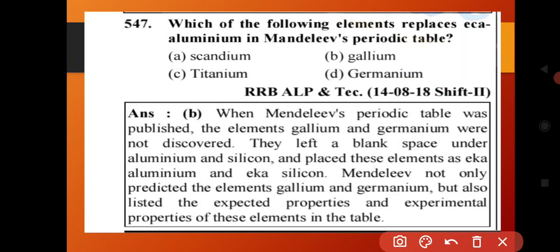In Mendeleev's periodic table, blanks or gaps were left for undiscovered elements. The element that replaced Eka-aluminum is Gallium. Gallium, Germanium, and Scandium were predicted elements.